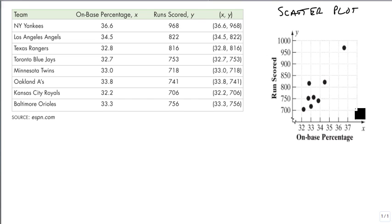Here's the New York Yankees at 36.6 and 968. Here's the Kansas City Royals down at 32.2 and just a little over 700.